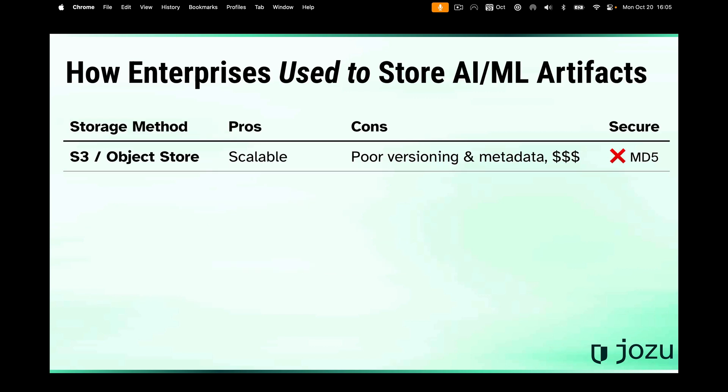What are some of the things that people use today? Well, you've got S3 or object stores that are nice and scalable and familiar to everybody. But the versioning is pretty poor. The metadata is terrible if it even exists, and they can get expensive really fast, especially if you have large models, large datasets, or things that are changing a lot.